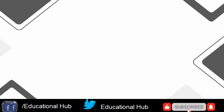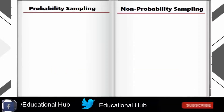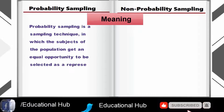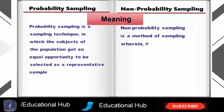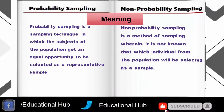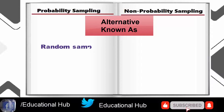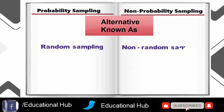The significant differences between probability and non-probability sampling. 1. Meaning: the sampling technique in which the subjects of the population get an equal opportunity to be selected as a representative sample is known as probability sampling. A sampling method in which it is not known which individual from the population will be chosen as a sample is called non-probability sampling. 2. The basis of probability sampling is randomization or chance, so it is also known as random sampling. In non-probability sampling, the randomization technique is not applied for selecting a sample, hence it is considered non-random sampling.